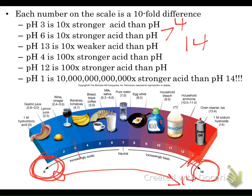pH 4 is a 100 times stronger acid than pH 6. Let's break that down: pH 4 is 10 times stronger acid than pH 5, 100 times stronger than pH 6, and 1,000 times stronger acid than pH 7. So the answer to that question is 6.